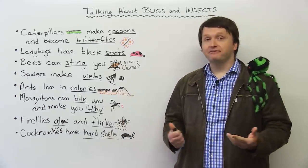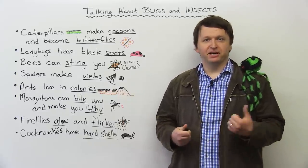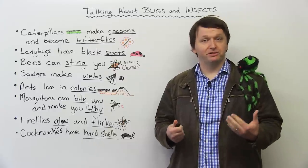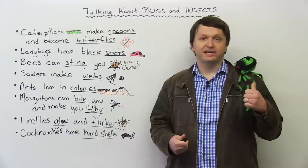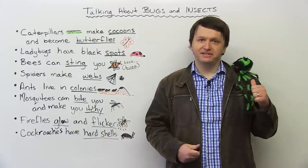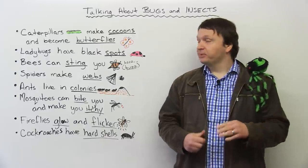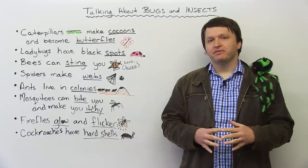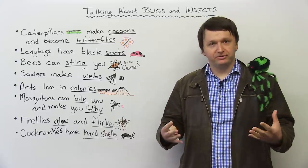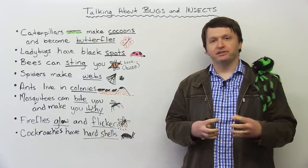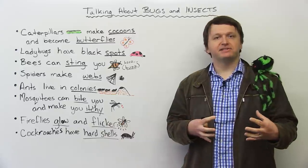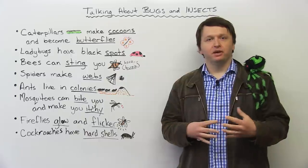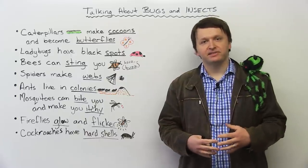And I thought, you know what, Steve? I'm going to do a lesson on bugs and insects. I think it would be really cool if you helped me. So here he is helping out, Steve the spider. This is a basic lesson on some of the vocabulary nouns that we use to talk about different bugs and insects, as well as some of the actions associated with those bugs and insects.